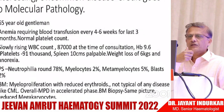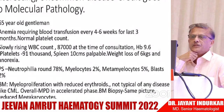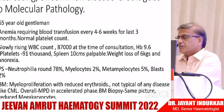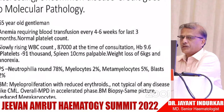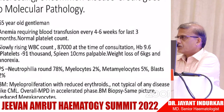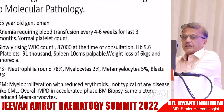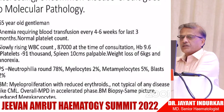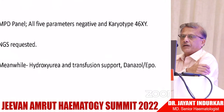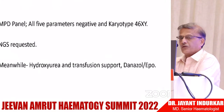Now a really interesting case — the credit here goes to molecular pathology. A 65-year-old gentleman requiring blood transfusion every four to six weeks for three months. Normal platelet count, slowly rising WBC reaching 87,000 at consultation, hemoglobin 9.6 (transfused), moderate thrombocytopenia, 10 cm palpable spleen, weight loss of about 6 kg, and anorexia. Peripheral smear showed neutrophils, a few myelocytes, metamyelocytes, and 2% blasts. Bone marrow showed typical myeloproliferation with reduced erythrocytes and reduced megakaryocytes — not typical of any single disease.